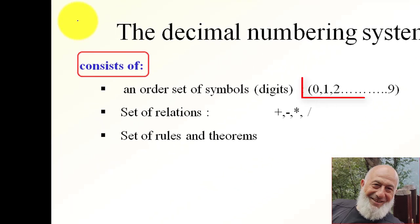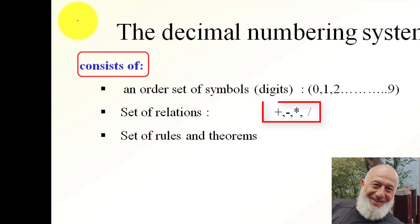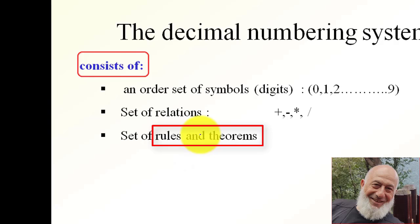For example, the decimal numbering system consists of an ordered set of symbols: 0, 1, 2, 3, all the way to 9. A set of relations — addition, subtraction, multiplication, division — and a set of rules and theorems that govern addition, subtraction, multiplication, and so on over the digits.